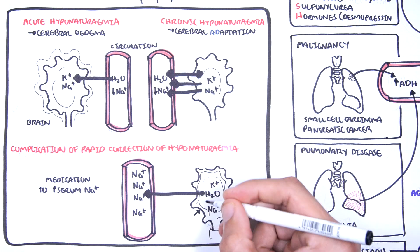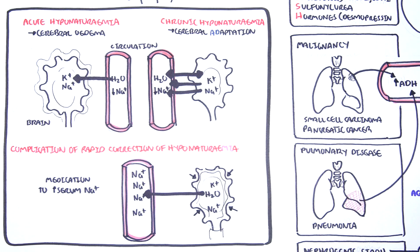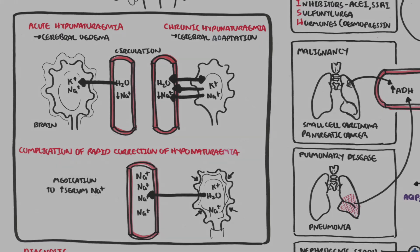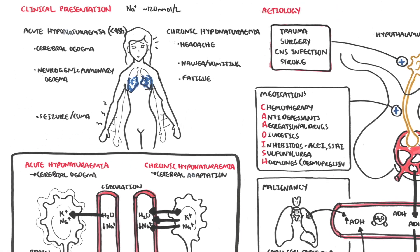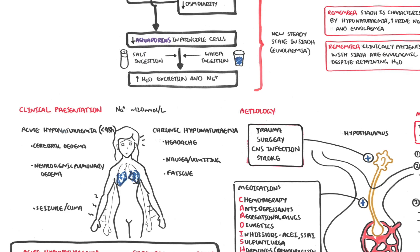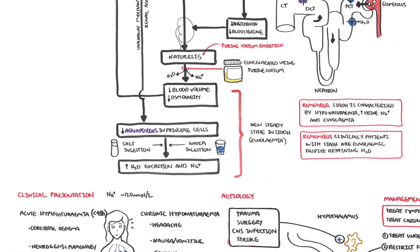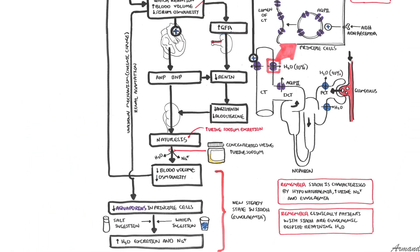This causes shriveling and shrinkage, you can say, of the brain parenchyma. It is termed central pontine myelinolysis because when first described, it was found in the pons. And what was seen was damage to the myelin sheath.